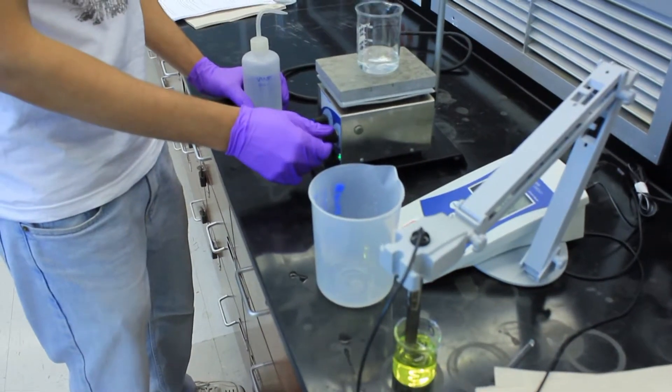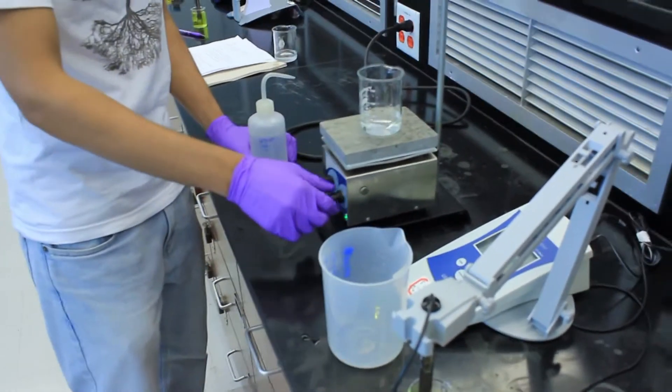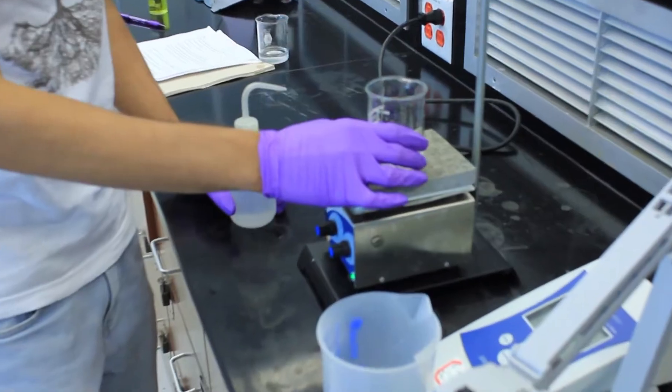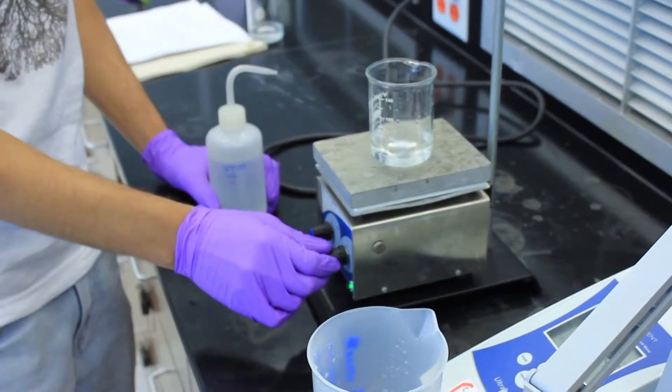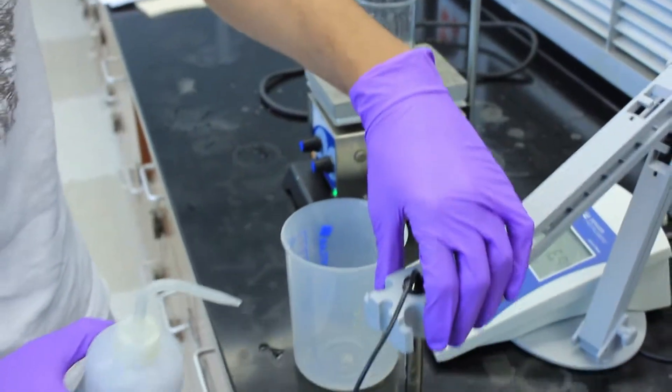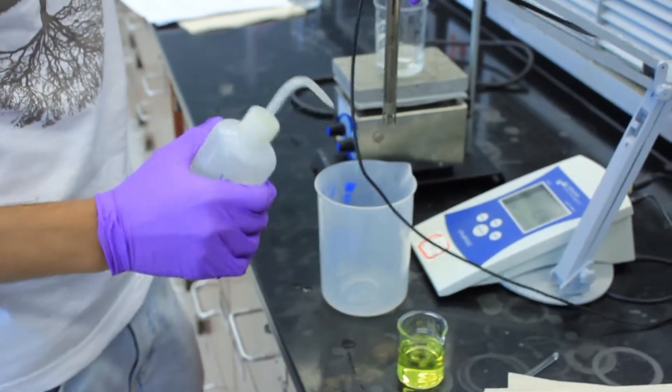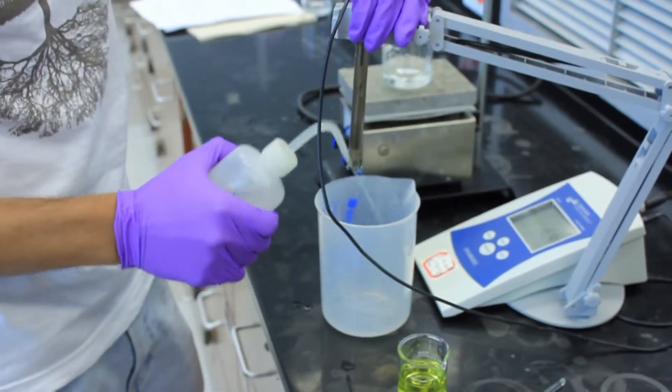Go ahead and start the stir motor and get it to a steady pace where the water is washing around. Take the pH meter and make sure you rinse it.